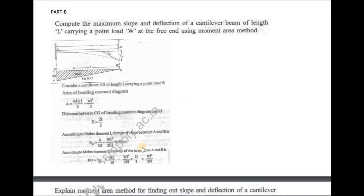Part B: Compute the maximum slope and deflection of a cantilever beam of length L carrying a point load W at the free end, using the moment area method. We have a cantilever beam with a concentrated point load at the free end, span L. We will find the slope and deflection by finding the bending moment diagram.